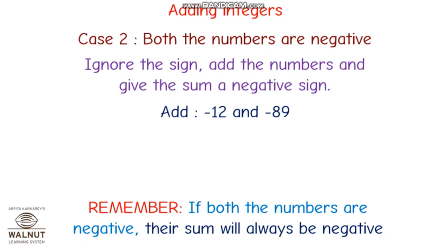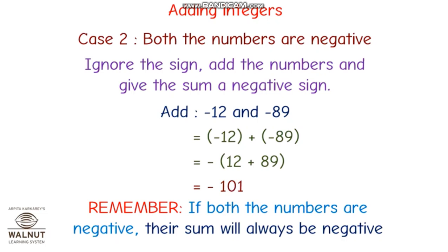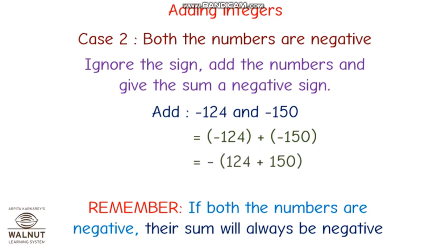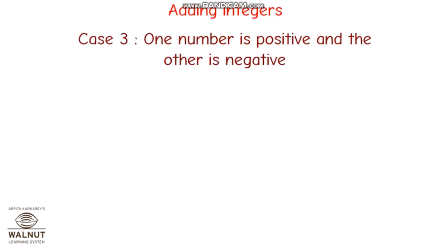Another example: minus 12 and minus 89. Write minus 12 plus minus 89, take minus as common — 12 plus 89 — so the answer will be minus 101. Remember: if both numbers are positive the answer is positive, both negative the answer is negative. For example, minus 124 plus minus 150 gives minus 274. That is the second case.